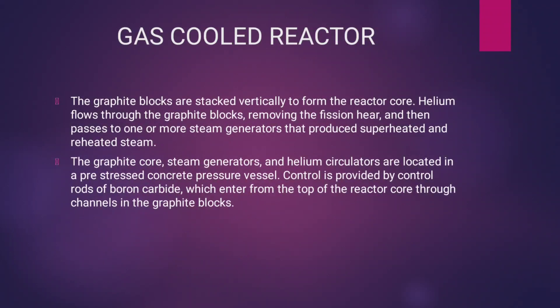The graphite blocks are stacked vertically to form the reactor core. Helium flows through the graphite blocks, removing the fission heat, and then passes to one or more steam generators, producing superheated and reheated steam. The graphite core, steam generators, and helium circuit are located in a pre-stressed concrete pressure vessel. Control is provided by control rods made of boron carbide, which enter from the top of the reactor core through channels in the graphite blocks.